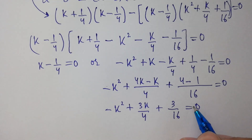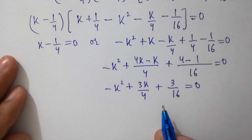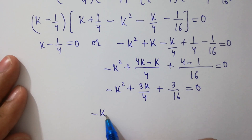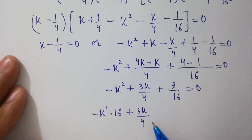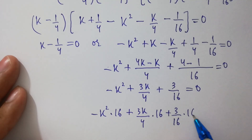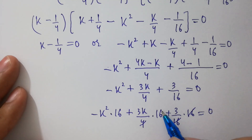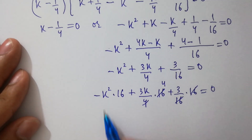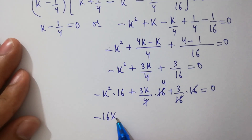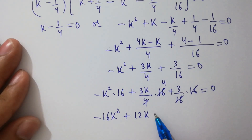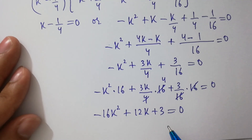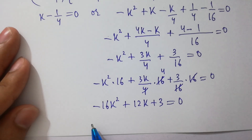Now multiply both sides by 16: minus 16k squared plus 12k plus 3 equals 0, which is a quadratic equation, where a equals minus 16, b equals 12, and c equals 3.